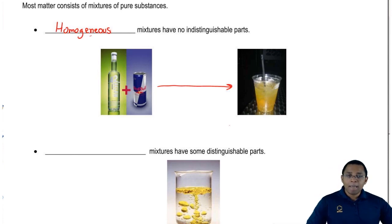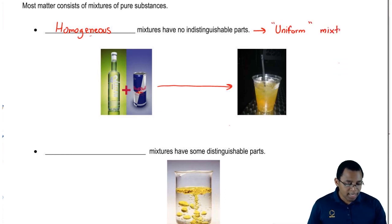We're going to say homogeneous mixtures mix together uniformly. It's a uniform mixture. All the parts mix perfectly together.